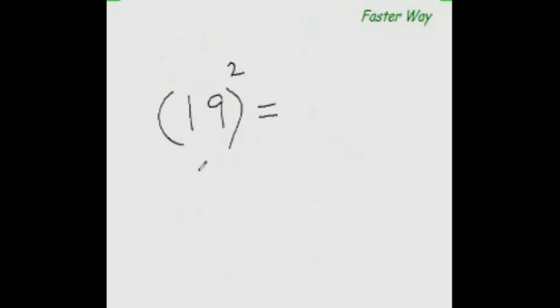So what is 19 square? Add this units digit to the entire number. So 9 plus 19 is 28. One more place to go. So find the square of 9. 9 square is 81. 28 plus 8 is 36. So the answer is 361.